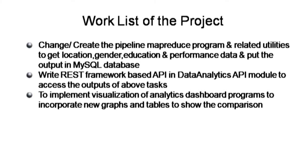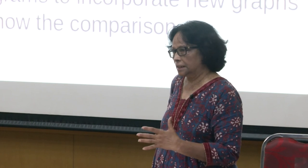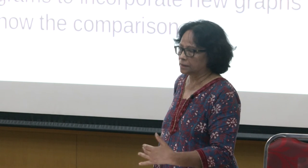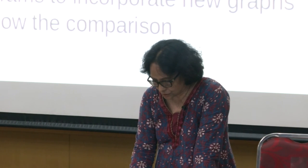For the project tasks, first you have to change or create the pipeline MapReduce program along with related utilities. You need to get location, gender, education, and performance data of users from MySQL and use it in the MapReduce tasks, then put the final results in a MySQL table. Second, you have to write a REST framework-based API for the data analytics API module so the analytics dashboard can call those APIs to get the corresponding data. Finally, you have to update the dashboard to show the new data and visualizations.